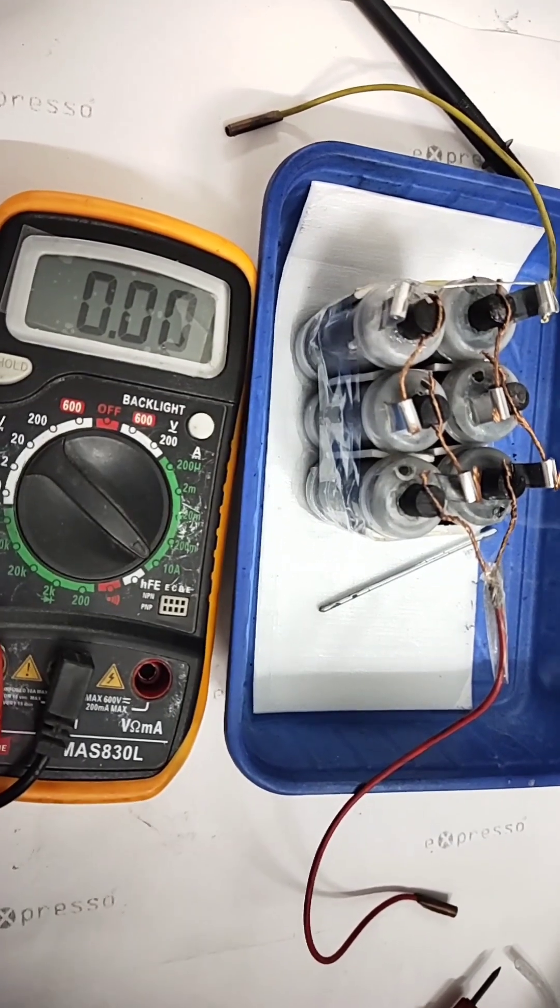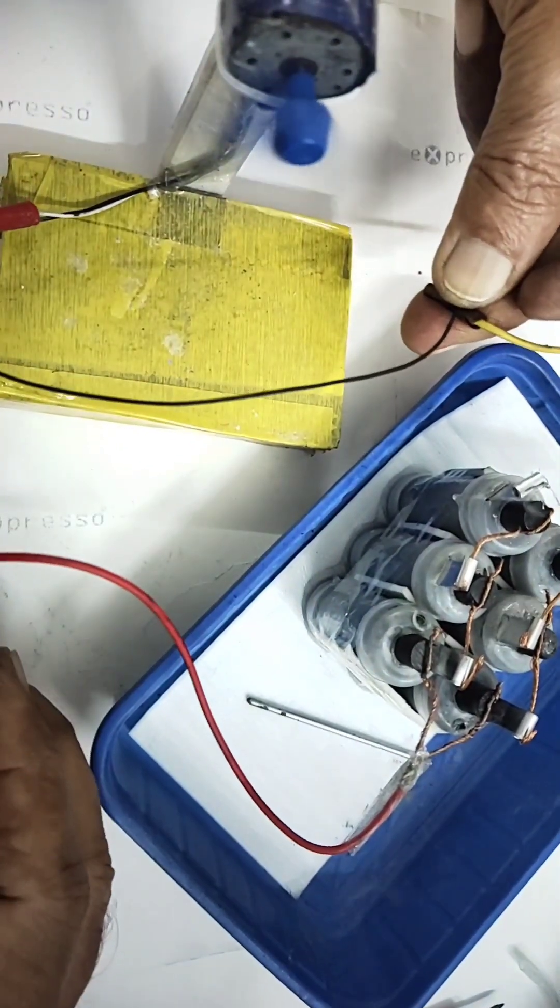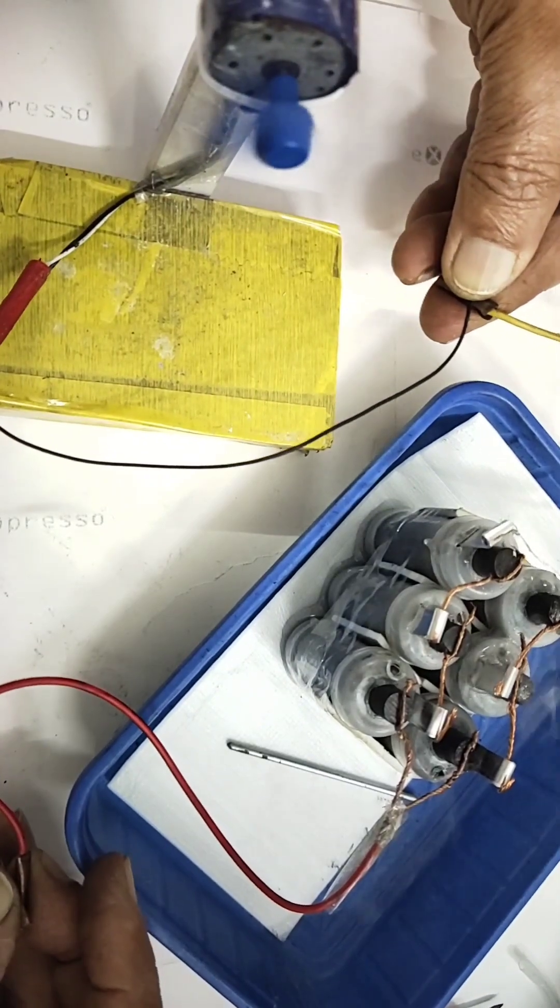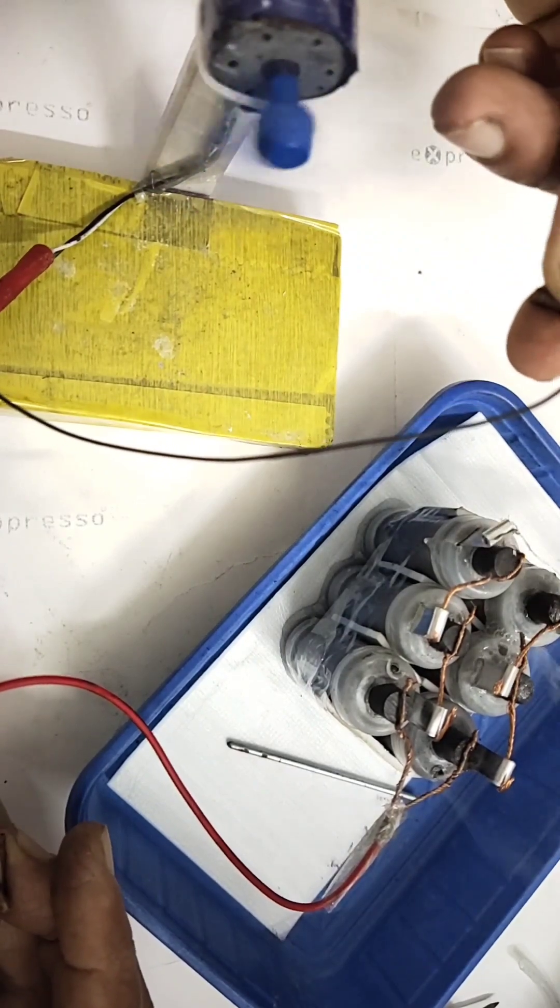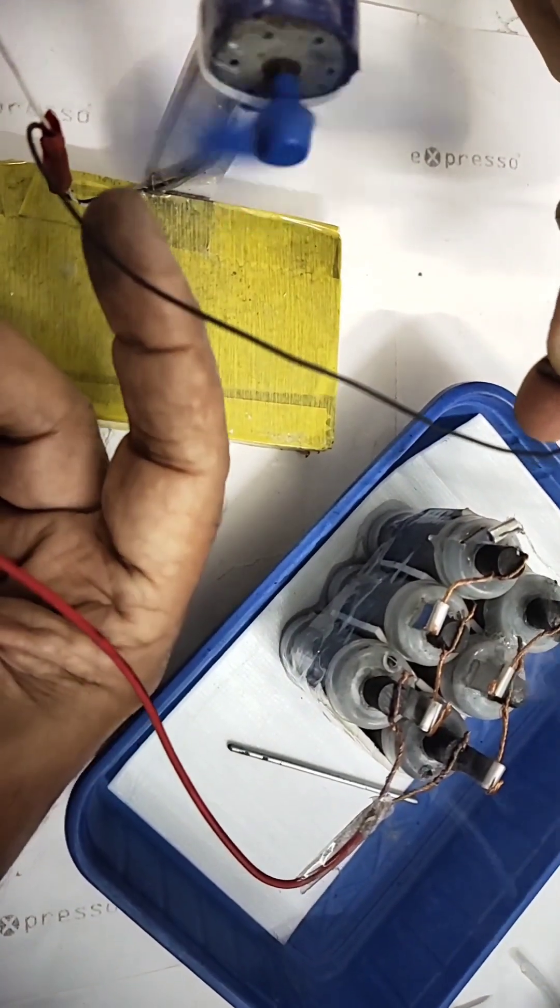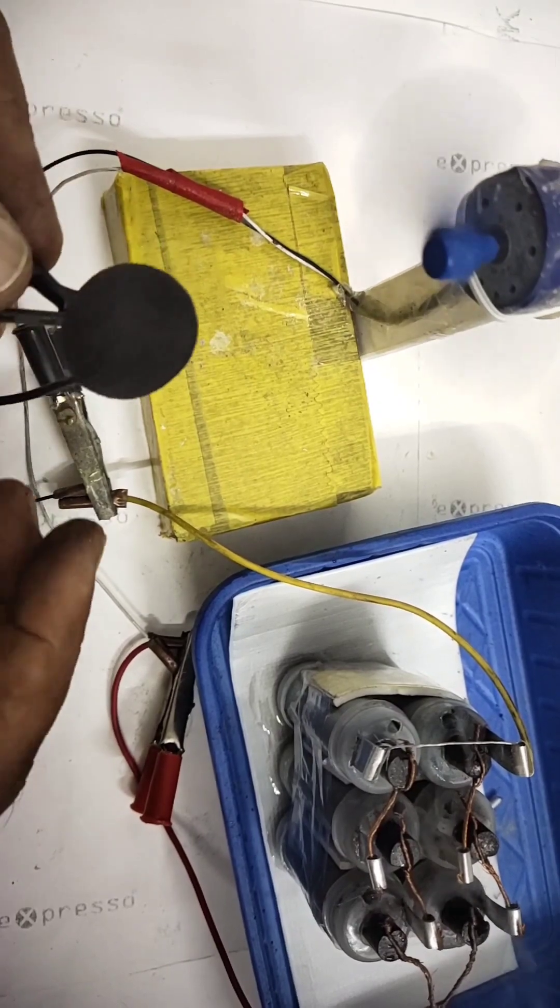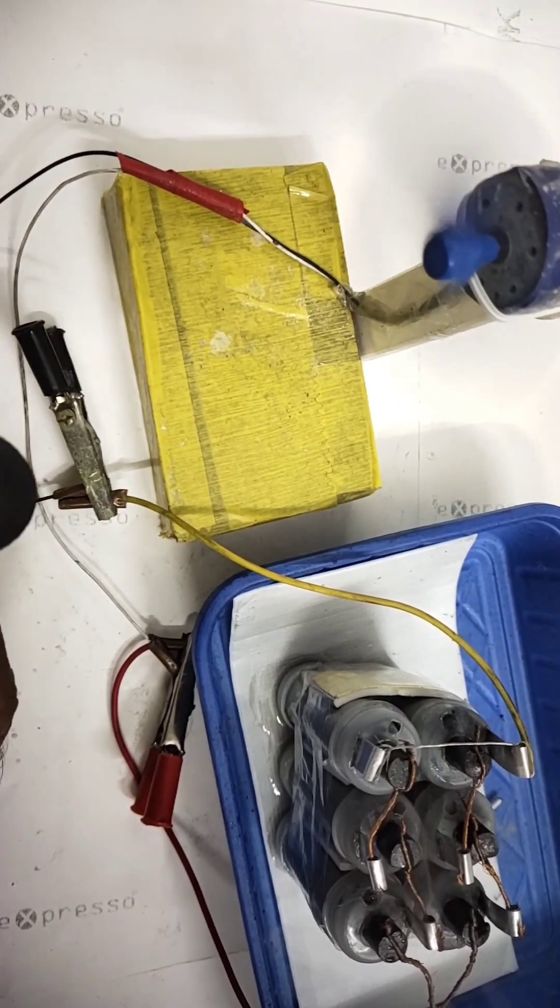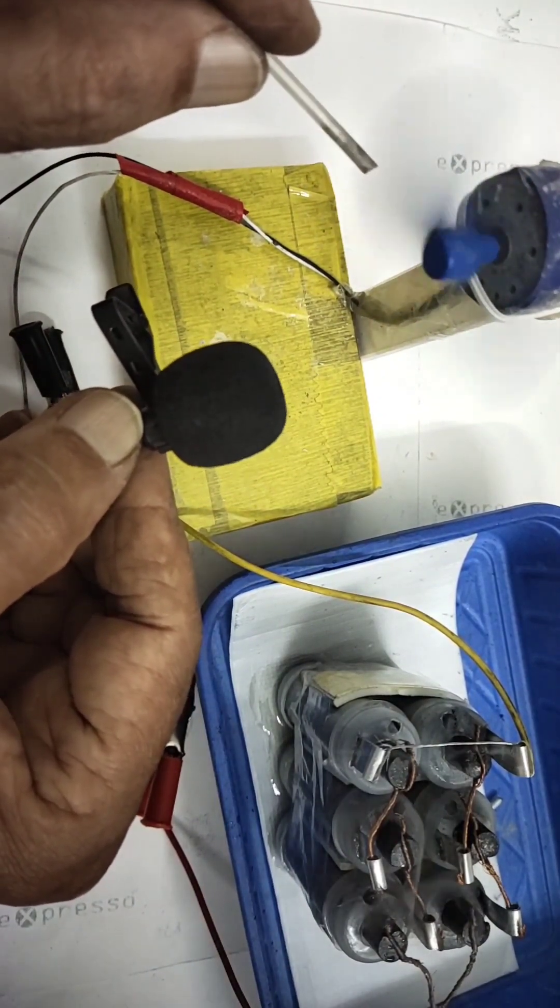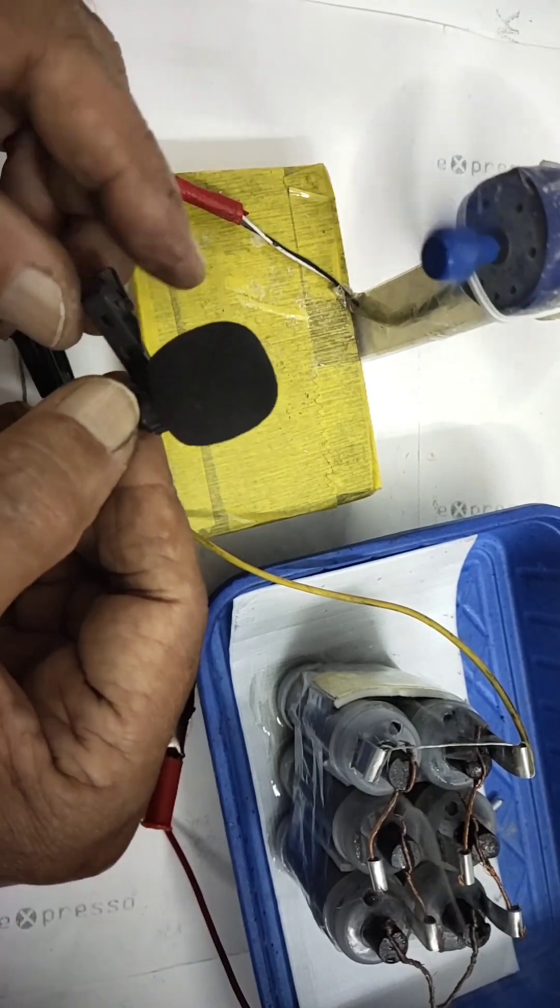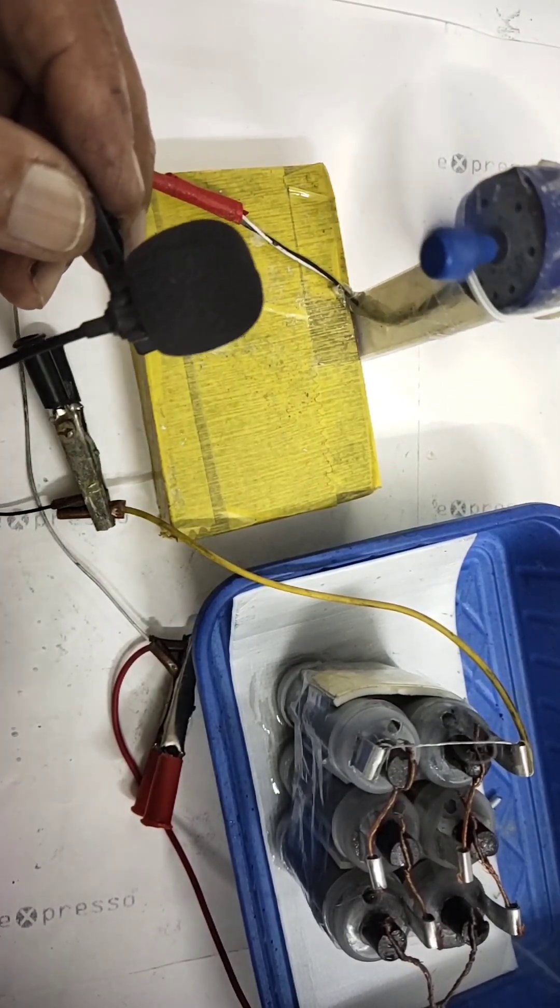We will see how the motor runs using this battery. You can see the motor runs beautifully, the fan running so fine. So aluminum air battery with 3 cells in series gives you nearly 3.5 volt and amperes is more than 300 to 400 milliamperes.